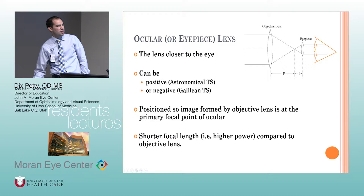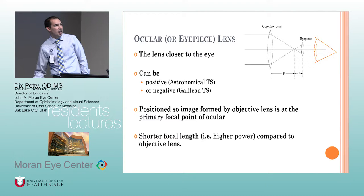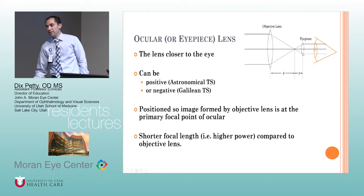The ocular is closer to the eye and can be positive or negative — whereas the objective lens is always positive. Depending on whether the ocular is plus or minus, that tells you what kind of telescope it is. It's positioned so the image formed by the objective lens falls at the primary focal point of the ocular.